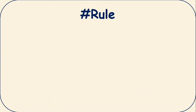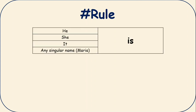There is a rule to use is and are. Number one: if the subject is he, she, it, or any singular name, you are going to use 'is' with all these subjects. For example: he is playing, she is playing, it is, Maria is.